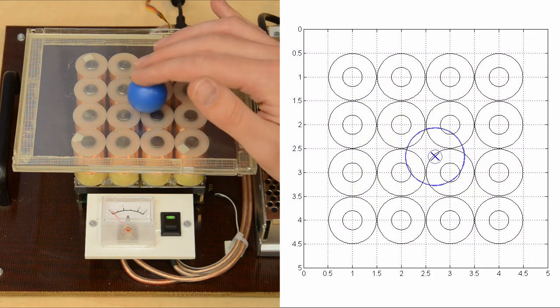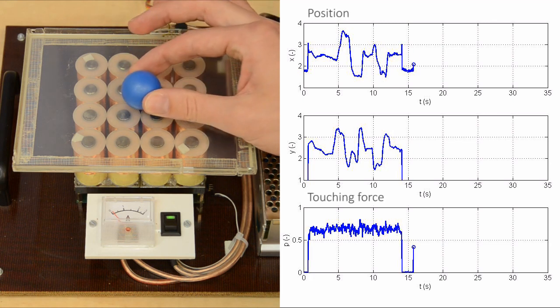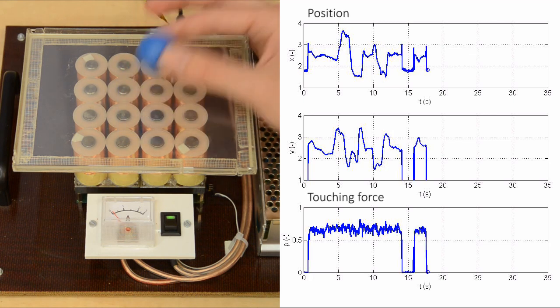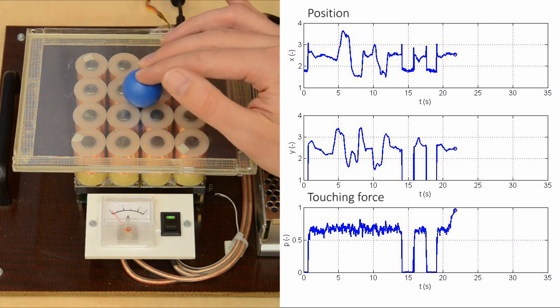Based on the voltages on the foil read by real-time Windows target, we can calculate the position of the ball. And not only that, we can also estimate the touching force. Sampling frequency can be up to 1 kHz.